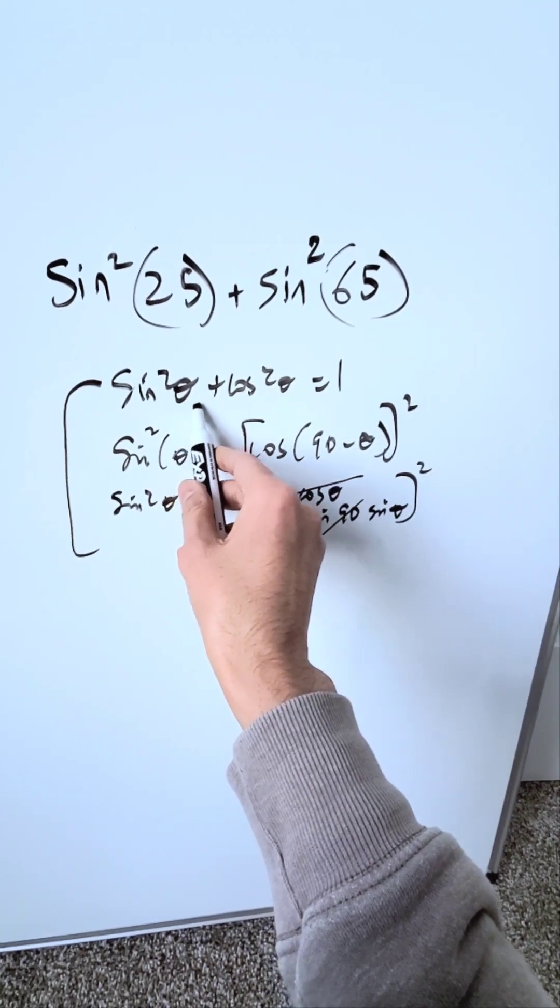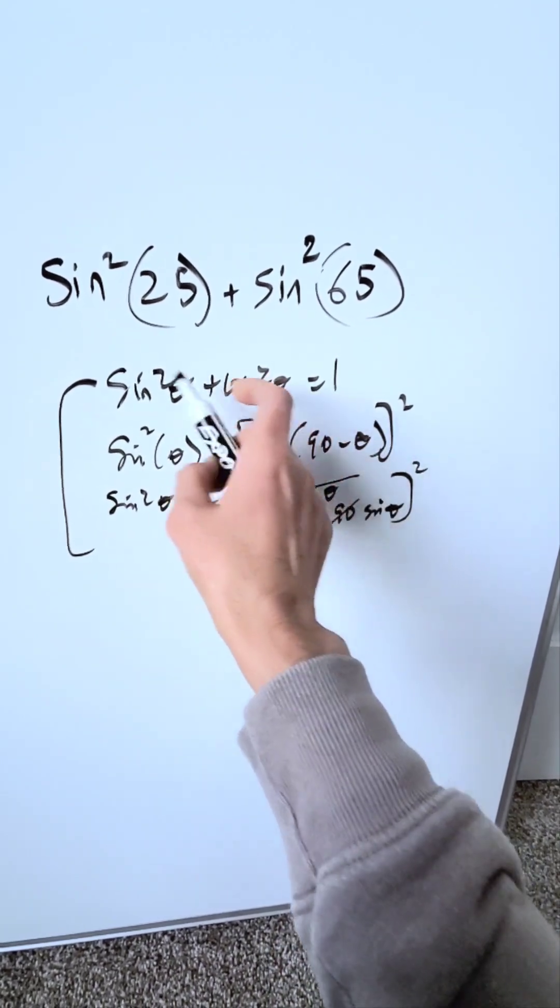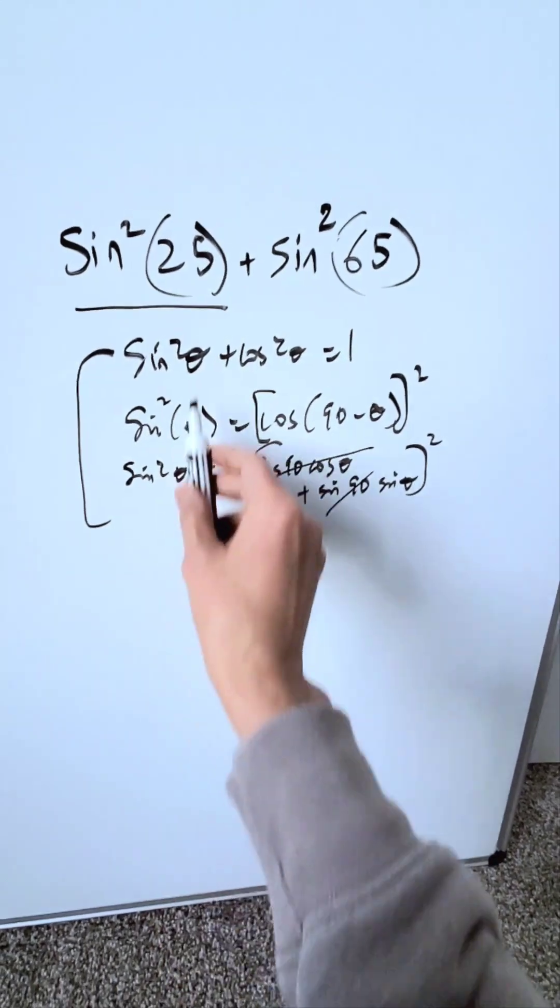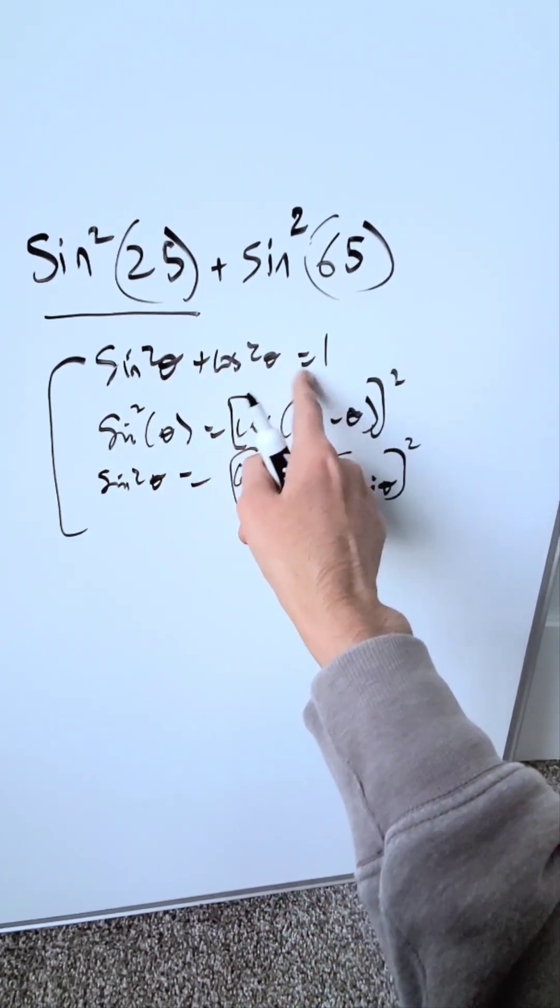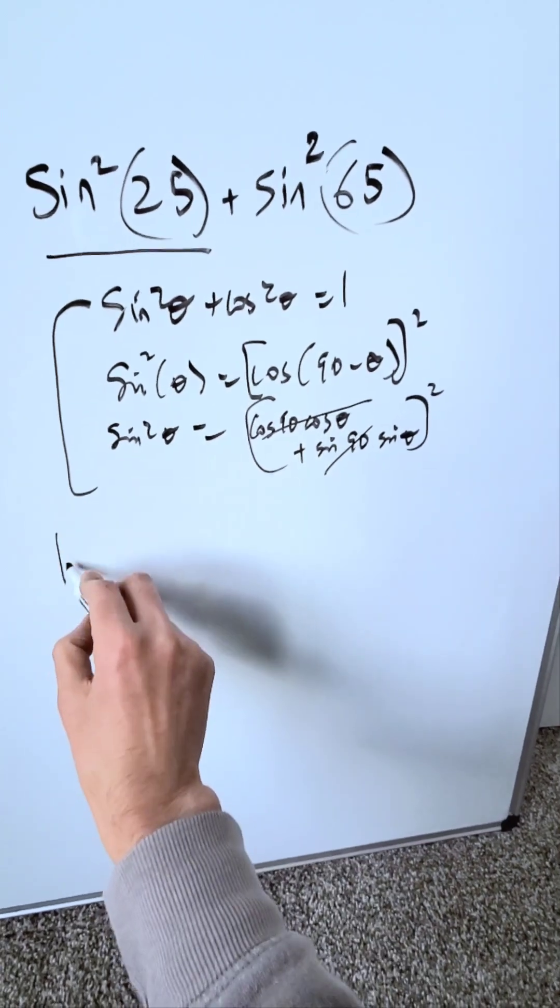Sine squared of any angle plus cosine squared of any angle is always equal to 1. Bring a substitution for here. Based on this identity, I can say sine squared of 25 is equal to 1 minus cosine squared of 25.